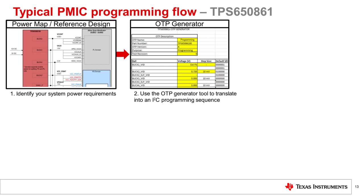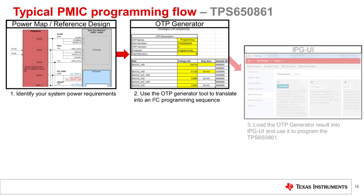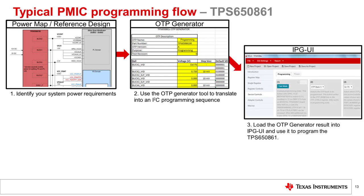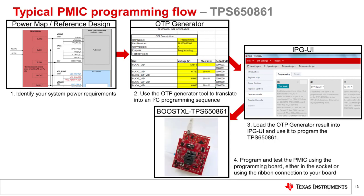Once the OTP generation is complete, load the results into the IPGUI software and use it to program the TPS-650861 device. The fourth step is programming and testing a sample PMIC unit using the programming board.